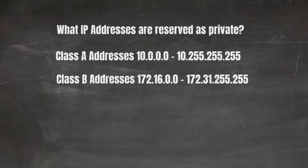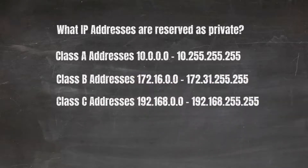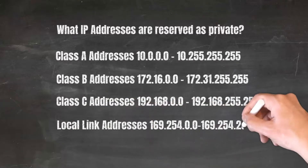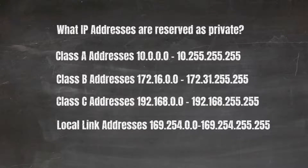Finally, there's a Class C address which is 192.168.0.0 to 192.168.255.255. If you see something starting with 192.168, you know that it's the Class C private IP address.